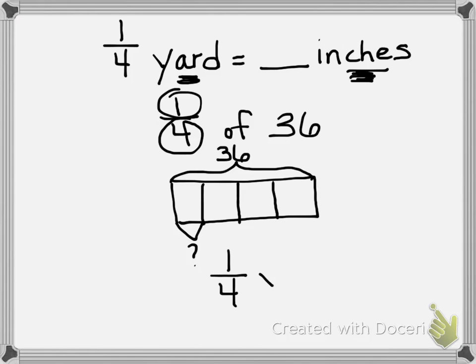we're going to go 1 fourth times 36 over 1. Now, when I look at the 4 and the 36, I need to think about, can I cross-simplify these? Is there a number that goes into both of these numbers? And the answer is yes. 4 goes into both of these numbers. 4 divided by 4 equals 1, and 36 divided by 4 equals 9. I'm going to multiply across. 1 times 9 equals 9, 1 times 1 equals 1. 9 over 1 equals 9. So I just want to make sure and check,